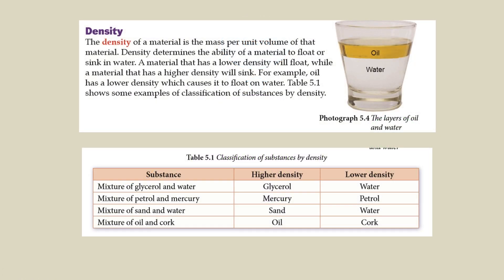The density of a material is the mass per unit volume of that material. Density determines the ability of a material to float or sink in water. A material that has a lower density will float, while a material that has a higher density will sink. We can use density to classify objects. For example, glycerol is denser than water, mercury is denser than petrol, sand is denser than water, and oil is denser than cod.